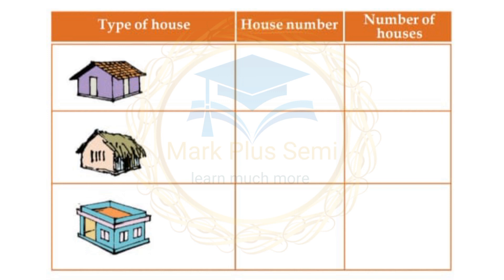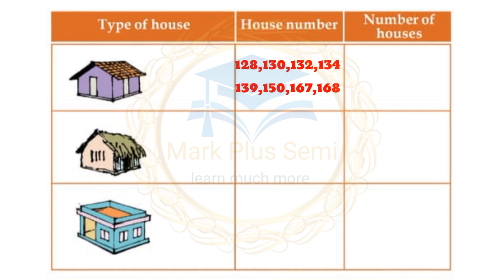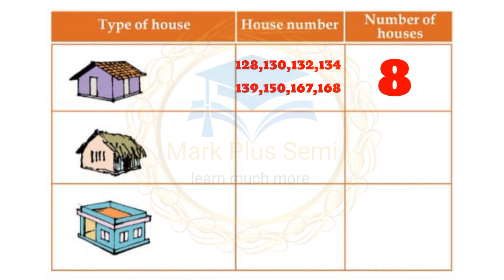Looking at the house numbers in the table: the first type has 3 houses. Counting: one, two, three. Total number of houses in that category is 3.